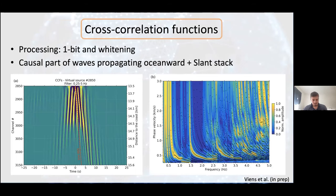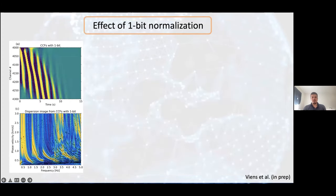We take the causal part of the correlation functions — waves propagating toward the ocean — and compute a slant stack to transform the time-distance dimension into a phase velocity versus frequency domain. The local maxima in this 2D plot reveal many dispersive features between the stations over the whole frequency range.